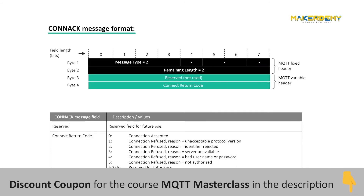The second packet is the CONNACK packet, also known as the connection acknowledgement packet. It is sent from the broker to the client when the broker receives the CONNECT request packet. It only has a fixed header and variable header fields. The payload is not present in the CONNACK packet.